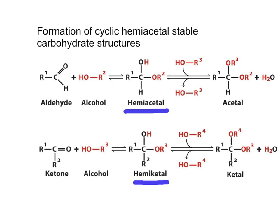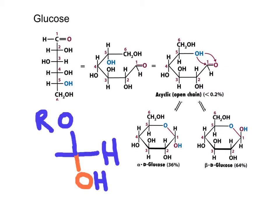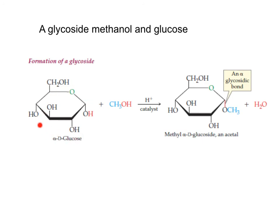The next reaction is the formation of the hemiacetal to produce the stable structures of monosaccharides. The hydroxyl of carbon number 5 of glucose can react with the carbonyl to produce a mixture of an alpha-anomer and a beta-anomer. This is a hemiacetal because it has an OH and an OR. The cyclic hemiacetal beta-anomer is more abundant and more stable than the alpha-anomer. The cyclic form of glucose is called a pyranose.